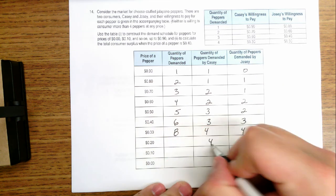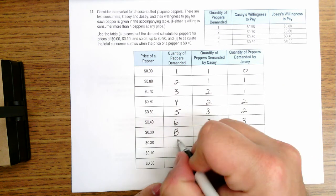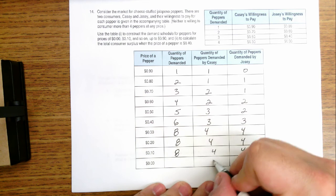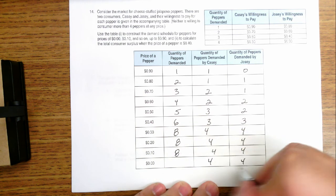If the price were $0.20, they'd still both want four. If it was $0.10, they'd both still want four. And if they were giving them for free, they'd still only want four.